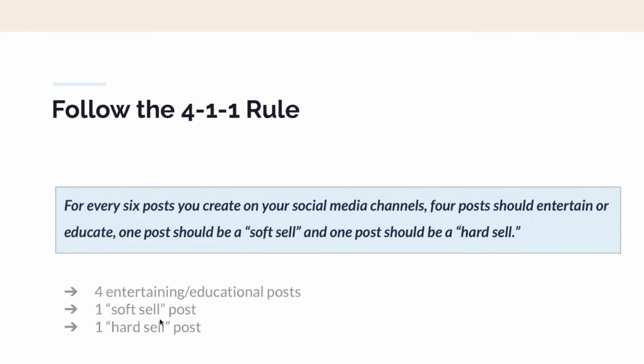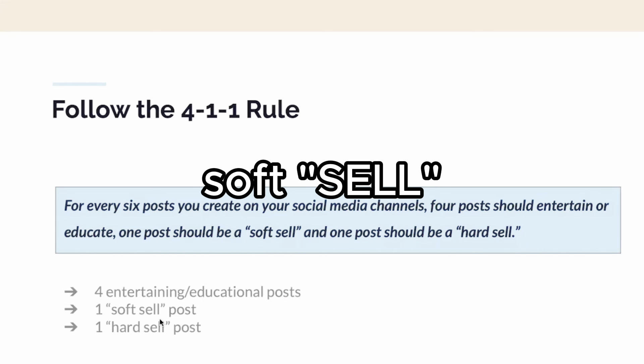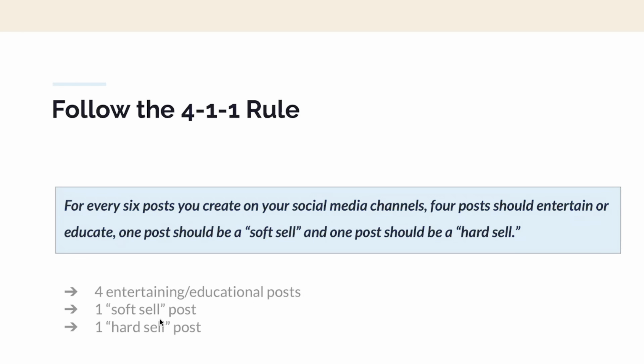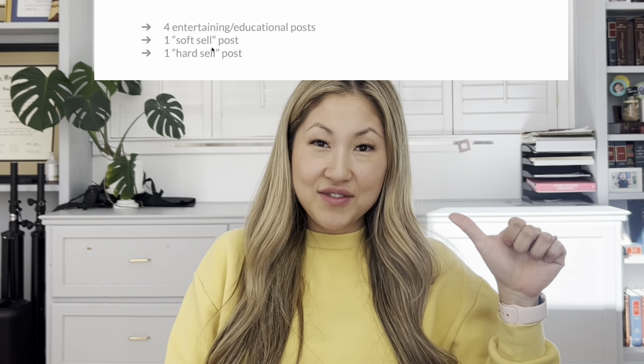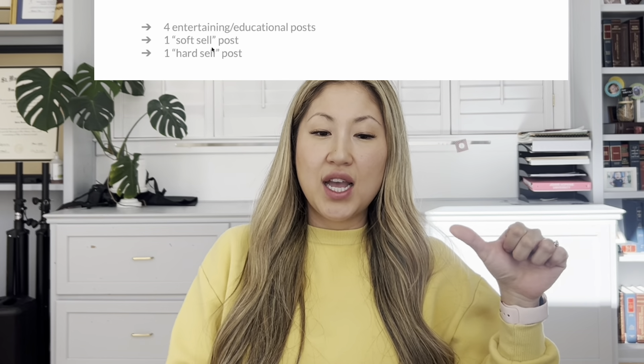I recommend following the 411 rule: for every six posts you create on your social media channels, four posts should be to entertain or educate, one post should be a soft sell, and one should be a hard sell. To simplify: four entertaining and educational posts, one soft sell that lets them know what you do, and one hard sell. This 411 rule will help you increase follower engagement and maximize your sales funnel and earning on social media.